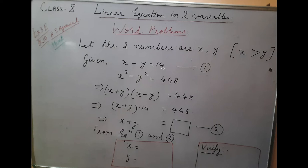Second, the difference of their squares is 448. We know the identity: x squared minus y squared equals (x plus y)(x minus y). So it is 448, and we can take out the value of x plus y.